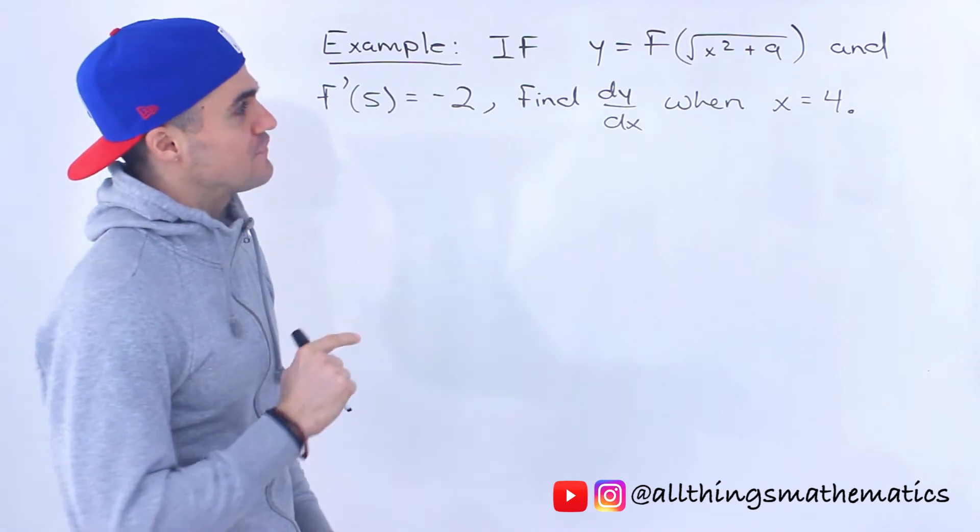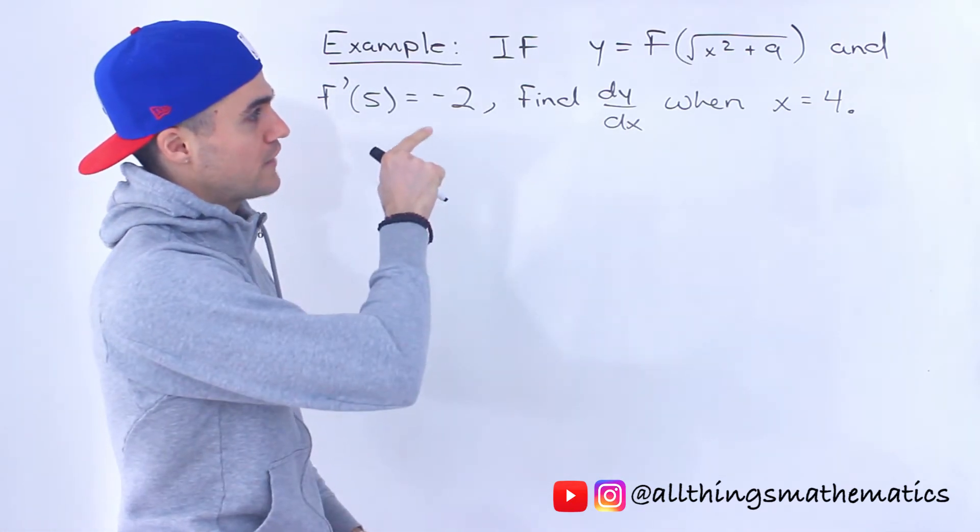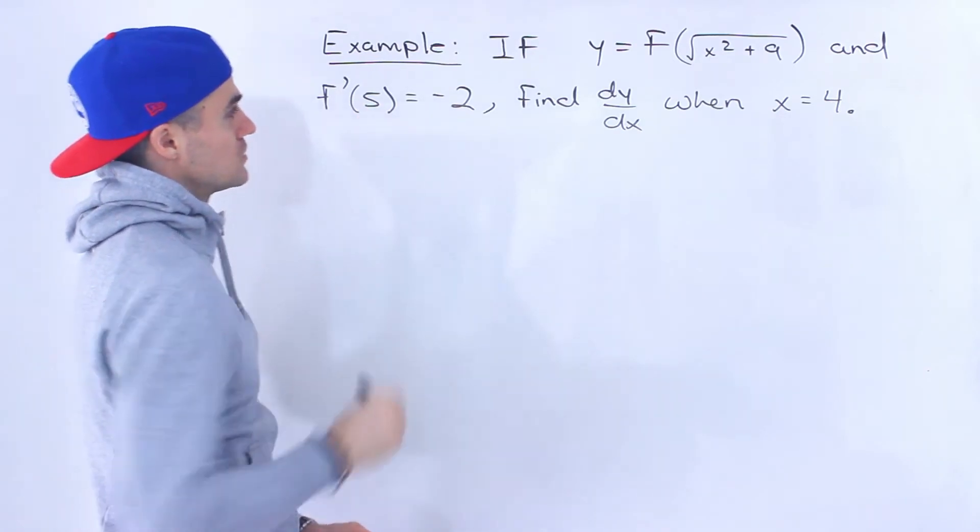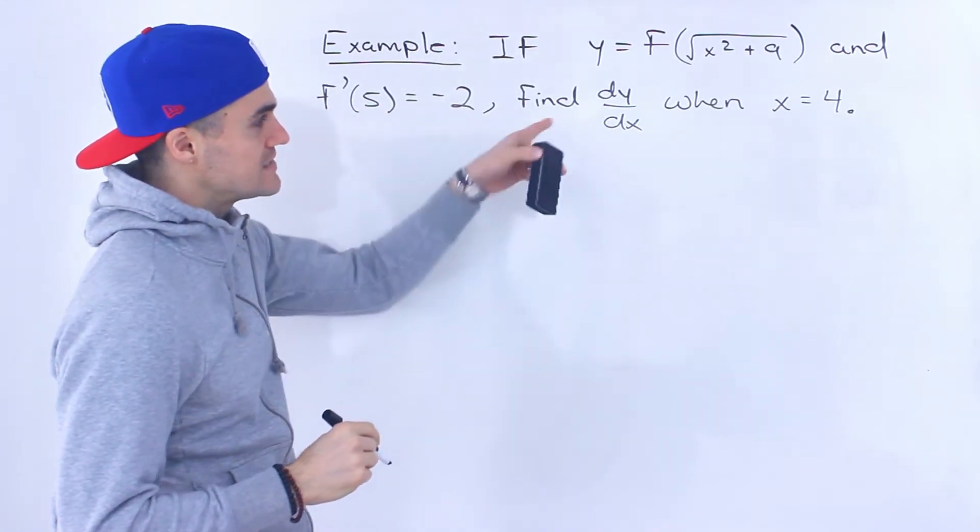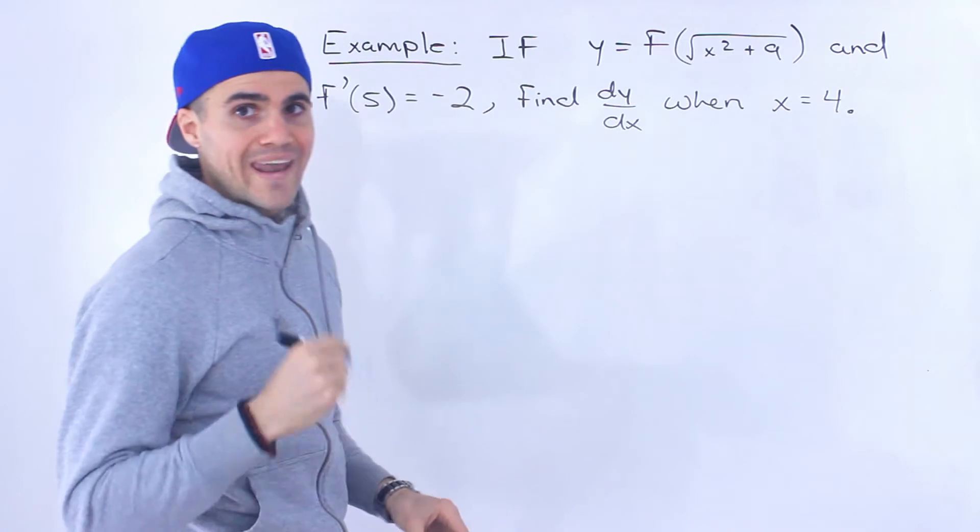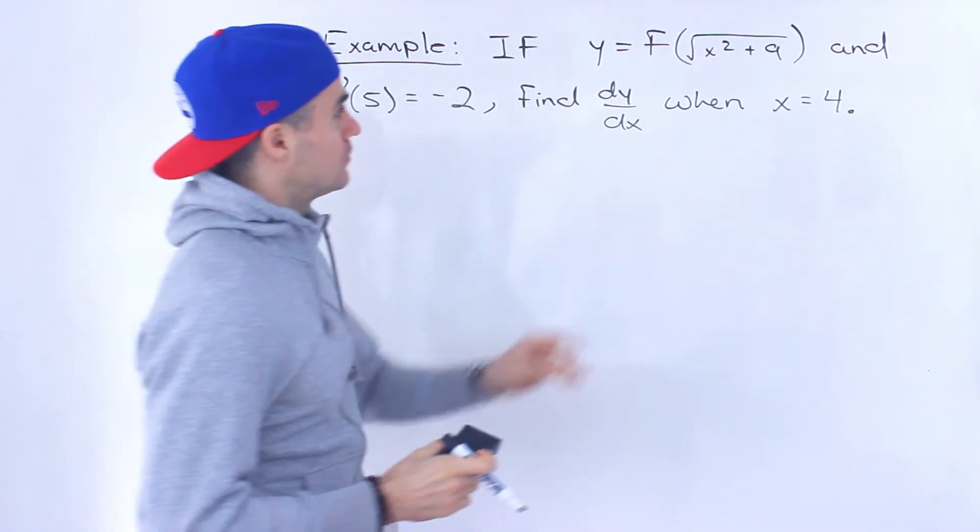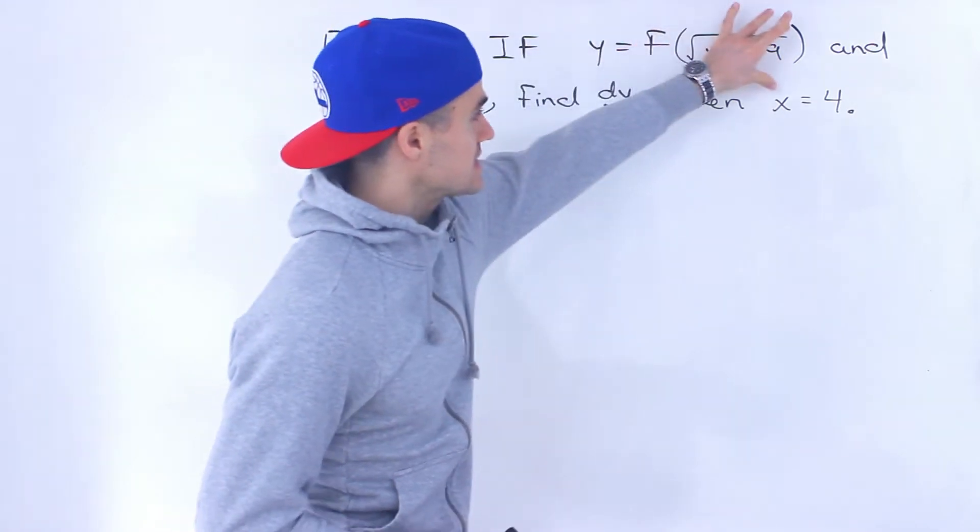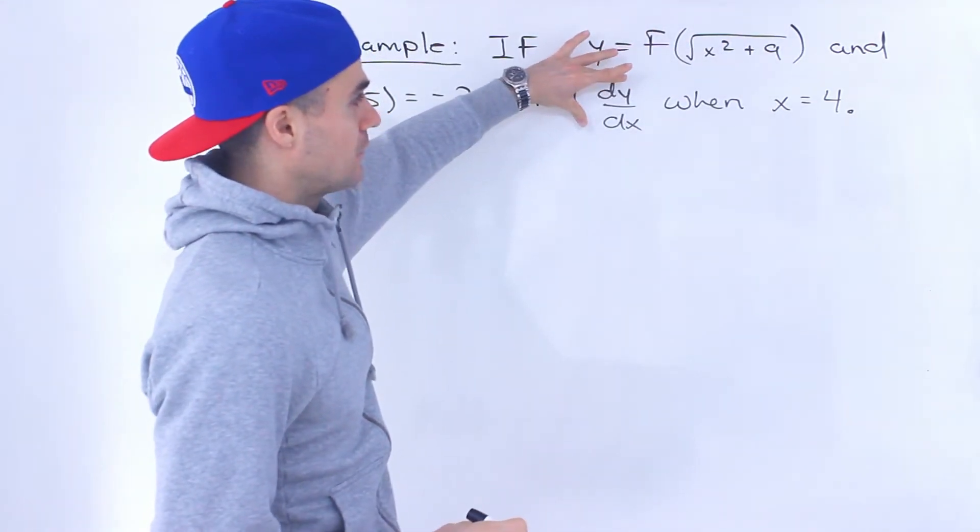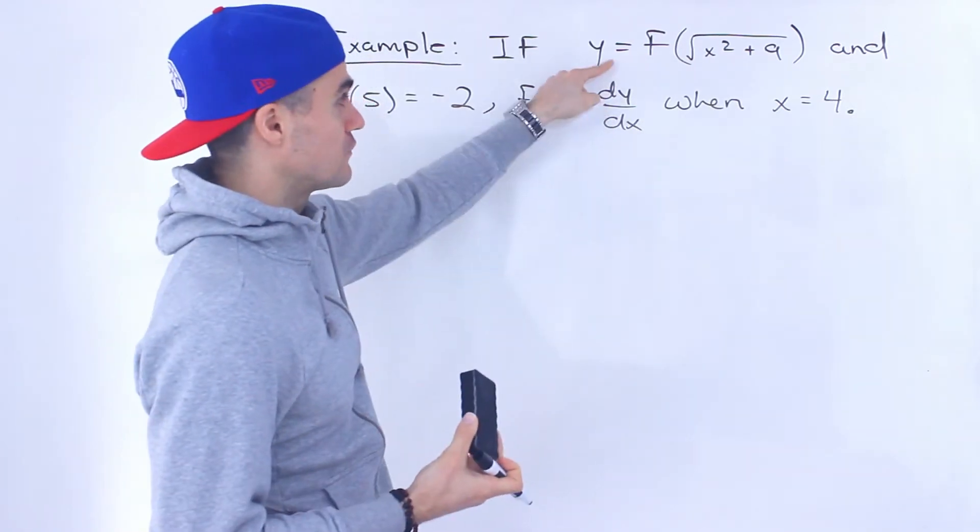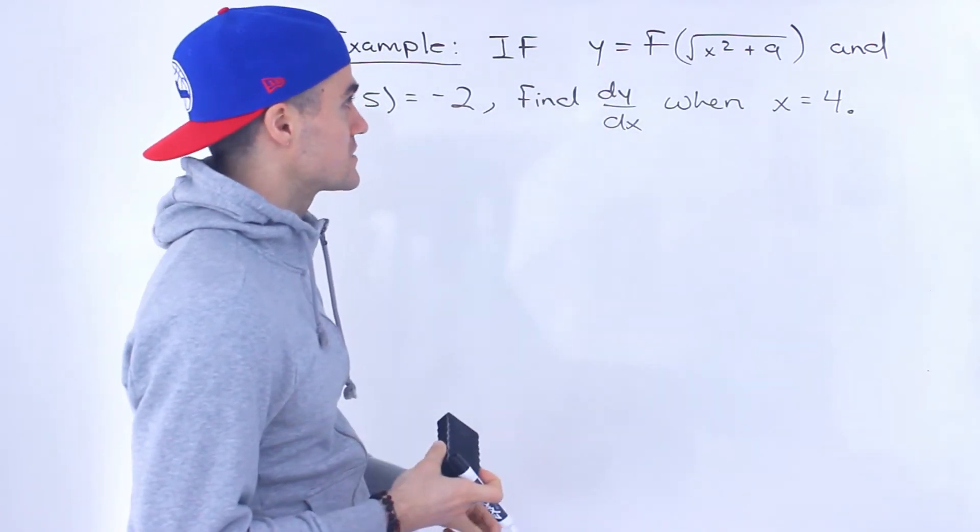So if y equals f of the square root of x squared plus 9 and f prime of 5 equals negative 2, we have to find dy/dx when x is equal to 4. So y is this function over here and when they're asking for dy by dx they're just basically asking for the derivative of this function over here.